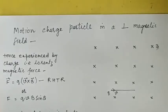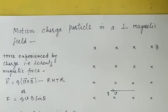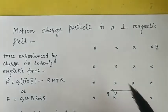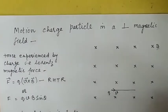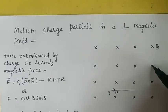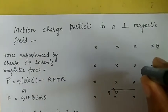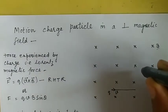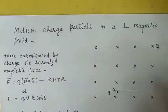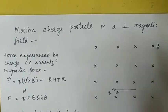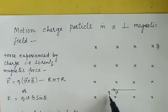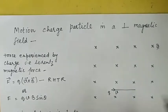In this video we will discuss the motion of a charged particle in a perpendicular magnetic field. The magnetic field is pointing into the plane of the paper, represented by crosses. Think of a pen with its nib pointing downward — that indicates the direction of the magnetic field, represented by B. A particle with charge Q is moving with velocity V in this perpendicular magnetic field.